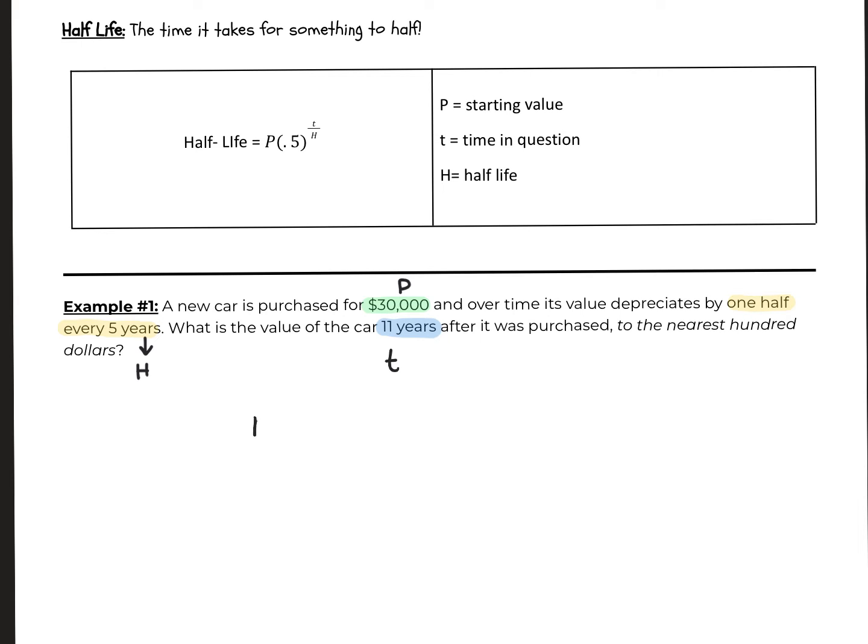Let's write the formula. A equals P times 0.5 to the t over H. So P is 30,000, 0.5 stays 0.5, the t is my 11, and the H is my 5.